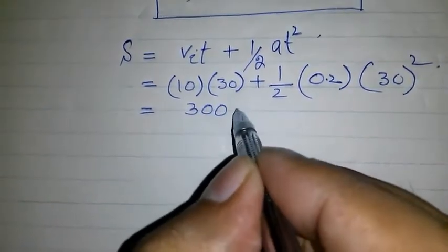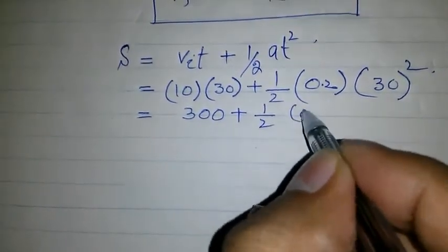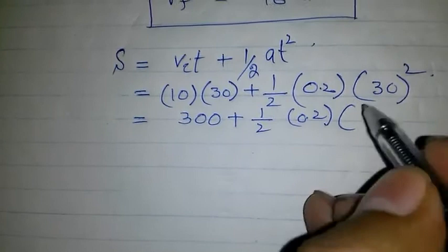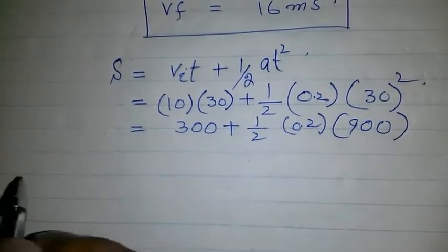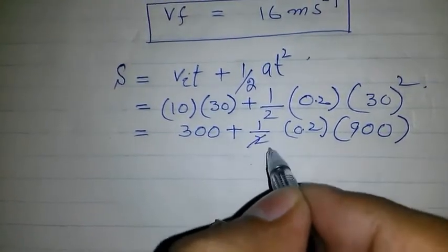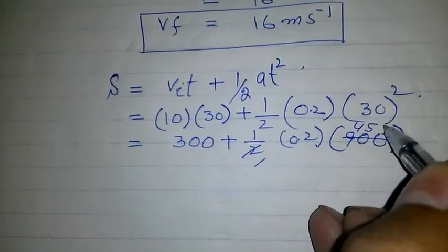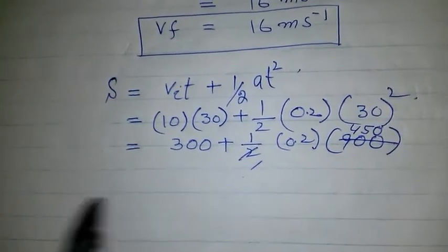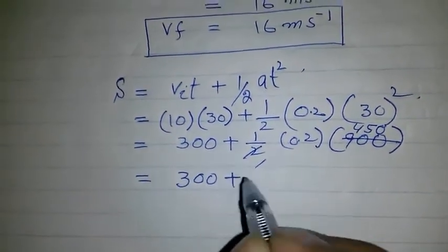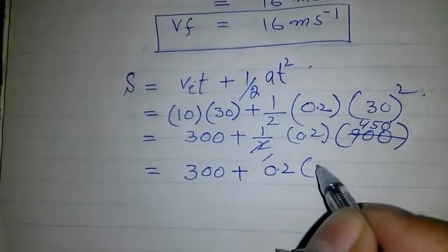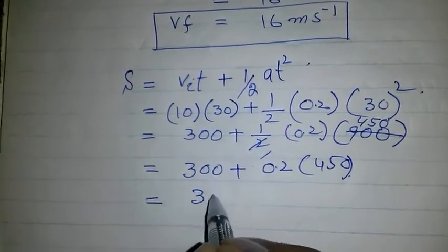30 times 10 is 300, plus 1 over 2 into 0.2 into 900. Now we got 300 plus 0.2 into 450.